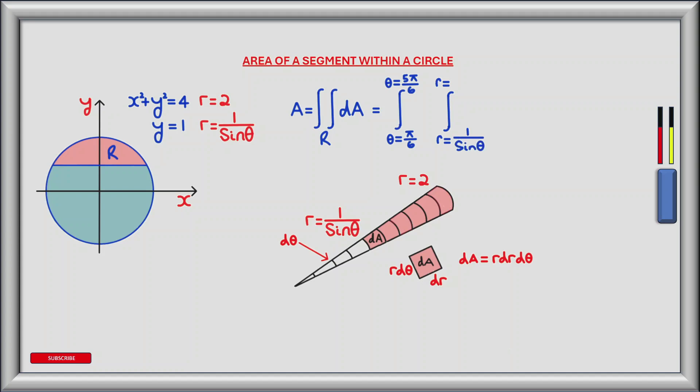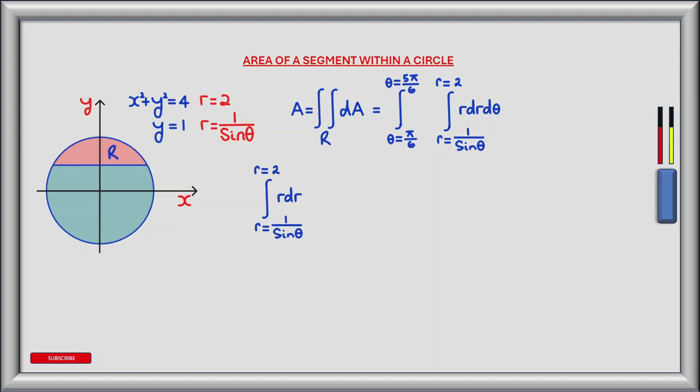Now we can add the limits of integration when we integrate along the radial distance r. The lower limit is r equals 1 divided by sin theta, representing the horizontal line, and the upper limit is r equals 2 at the perimeter of the circle. We are summing infinitesimally small pieces of area dA, which translates to r dr d theta. Evaluating the inner integral from r equals 1 divided by sin theta to r equals 2 of r dr, and using the power rule, the anti-derivative is r squared divided by 2. Plugging in the limits gives 2 minus 1 divided by 2 sin squared theta.